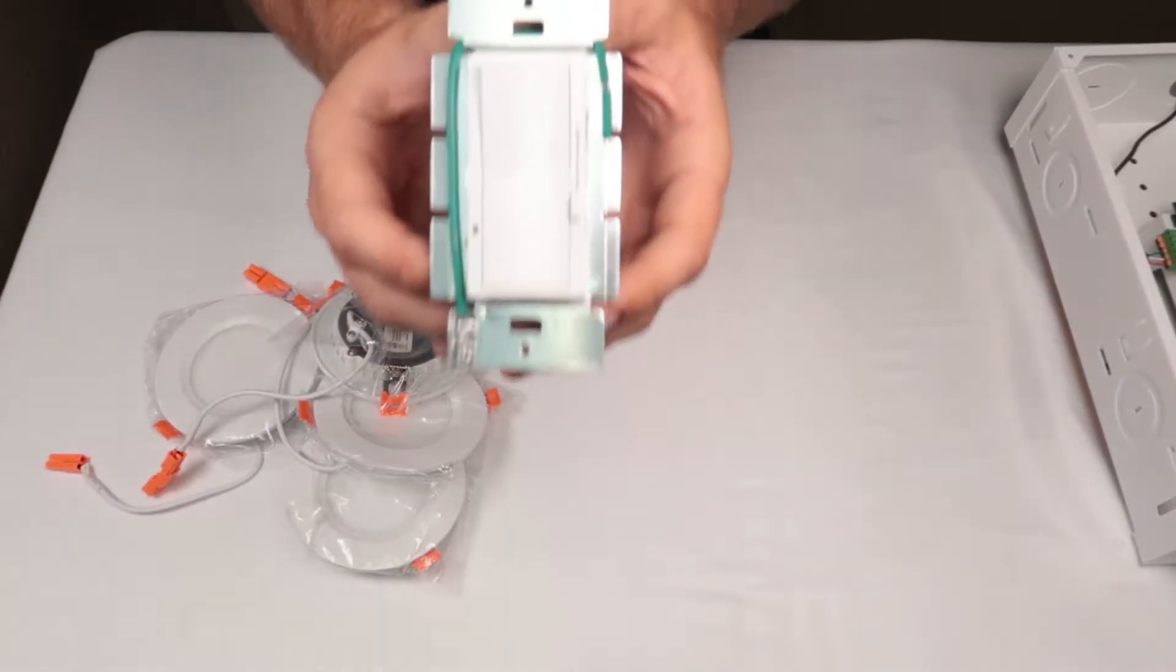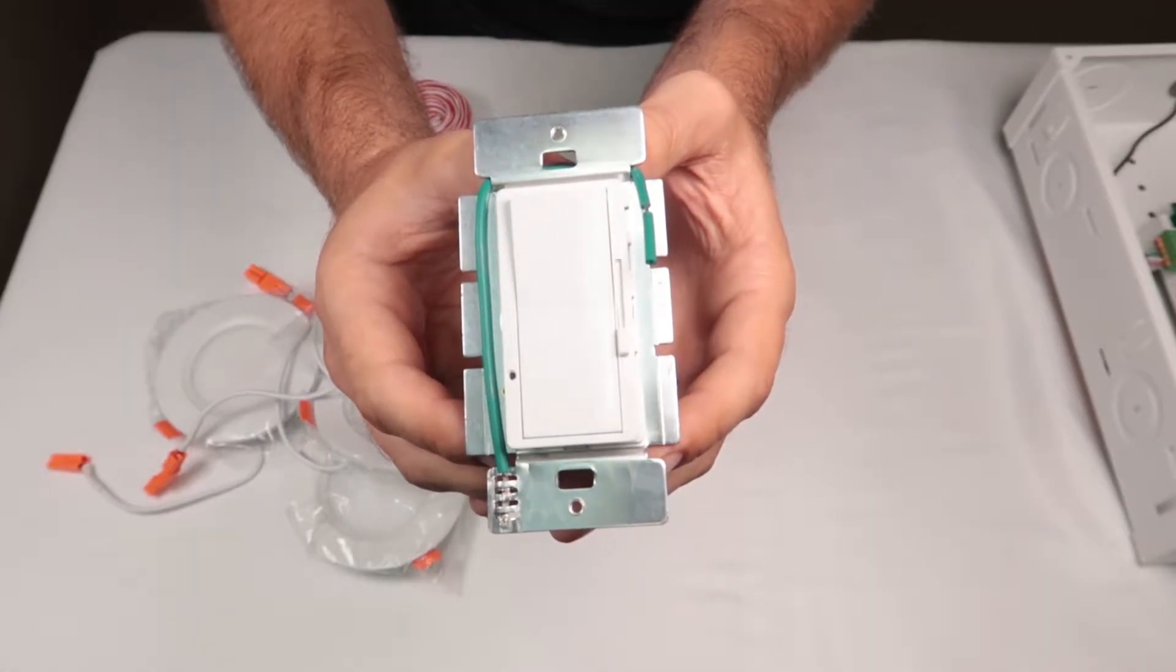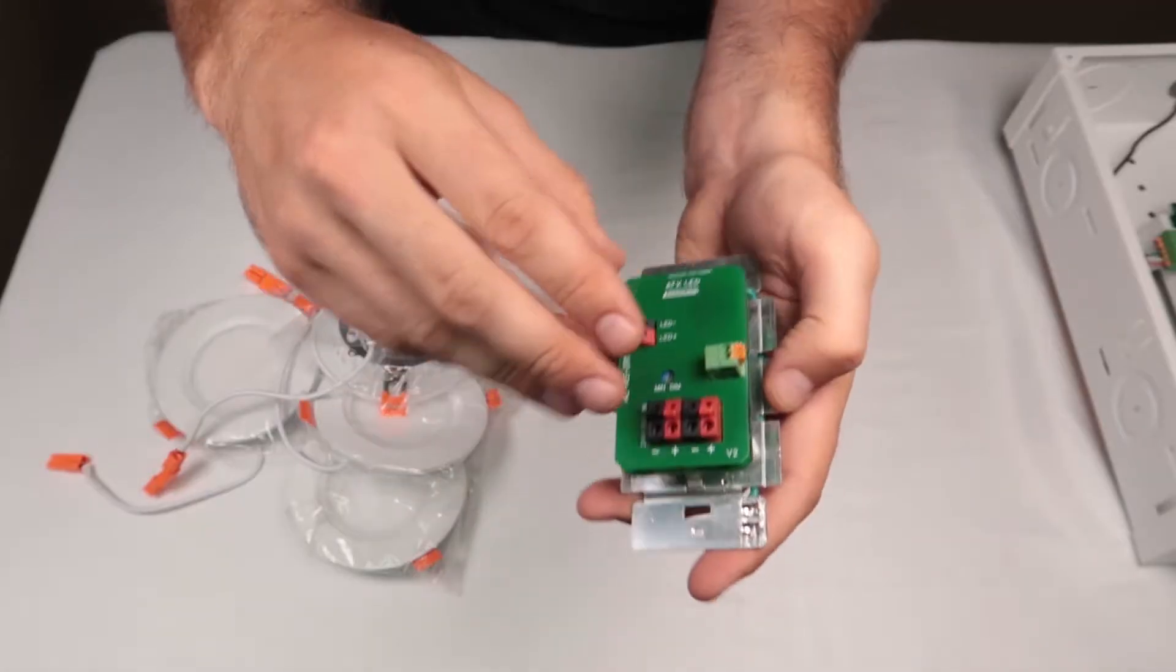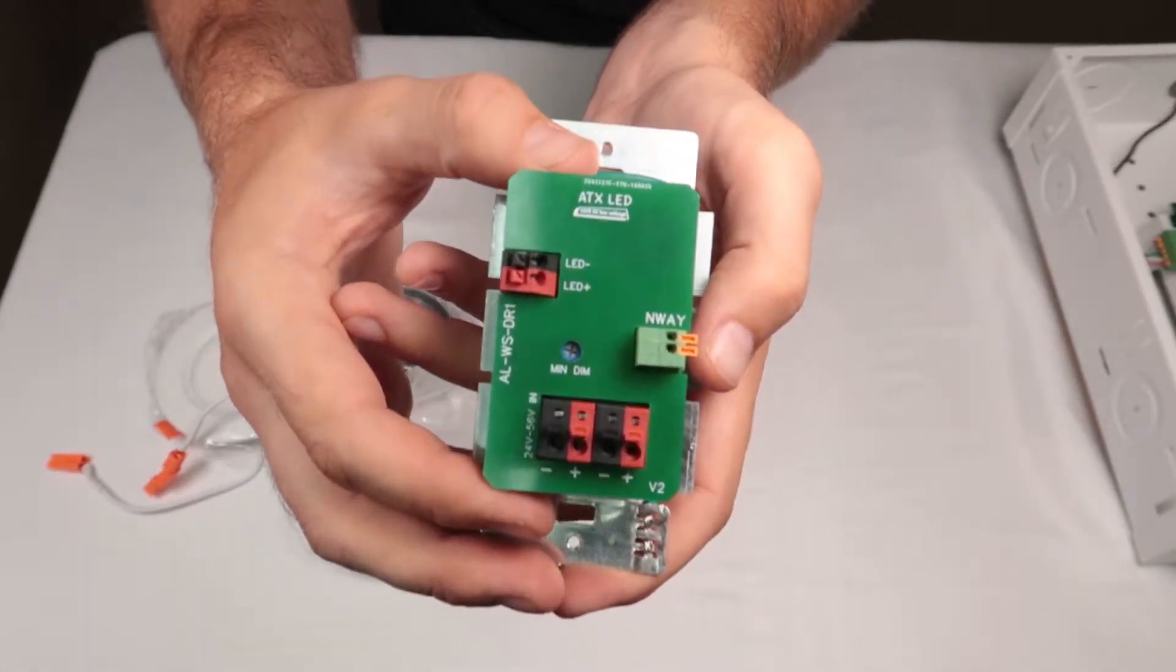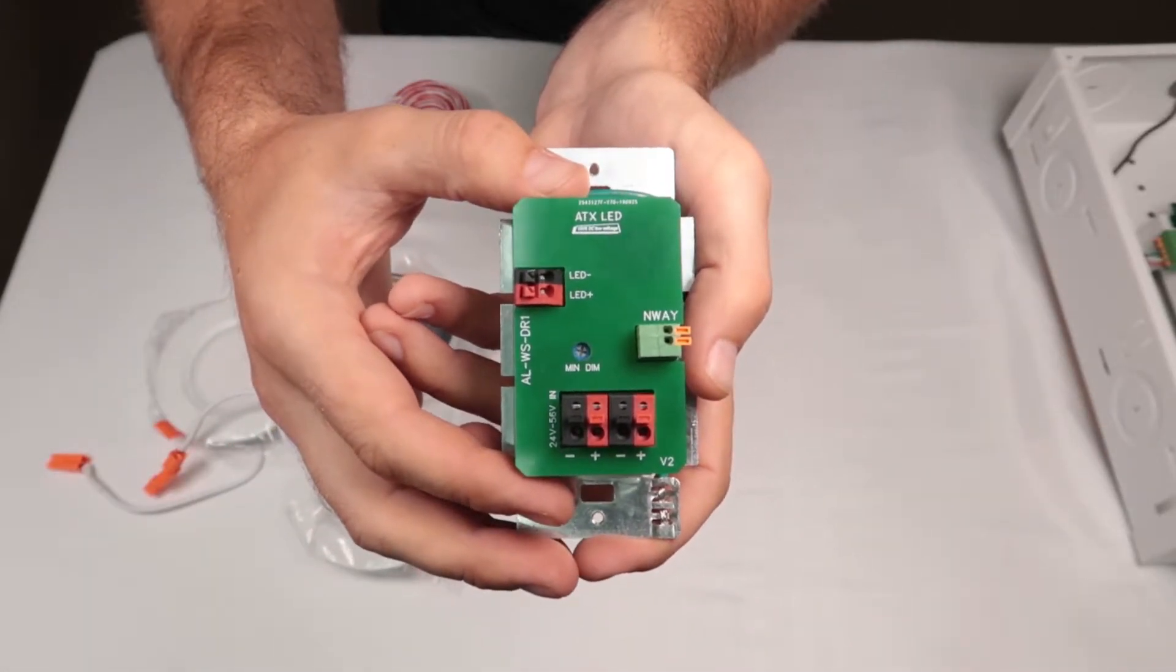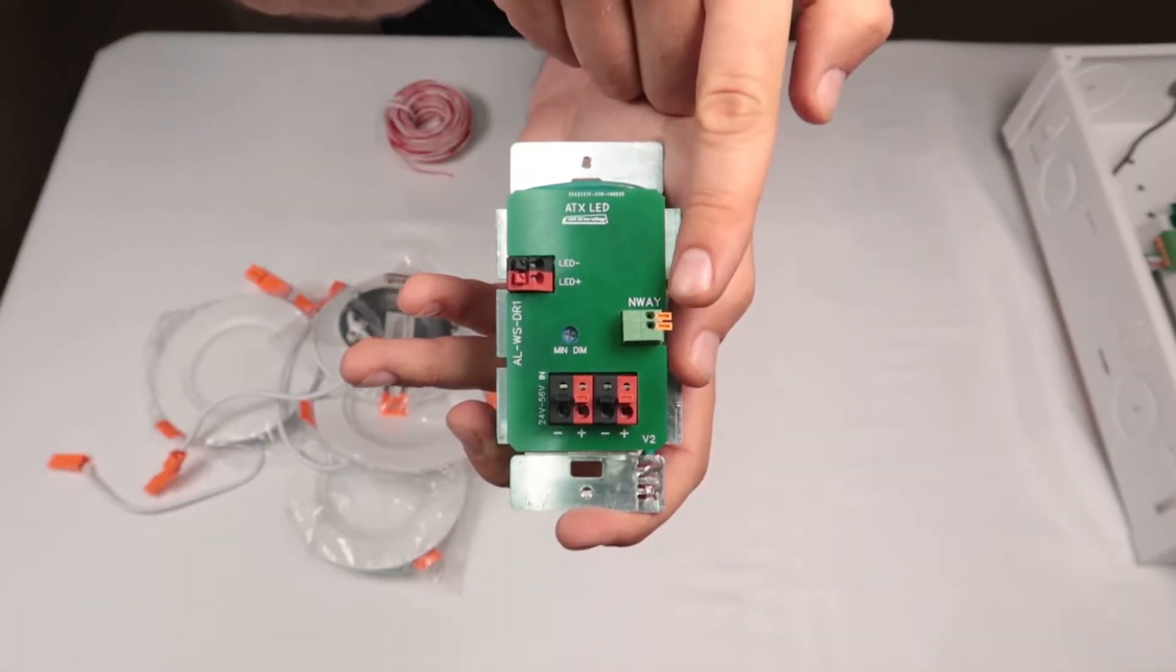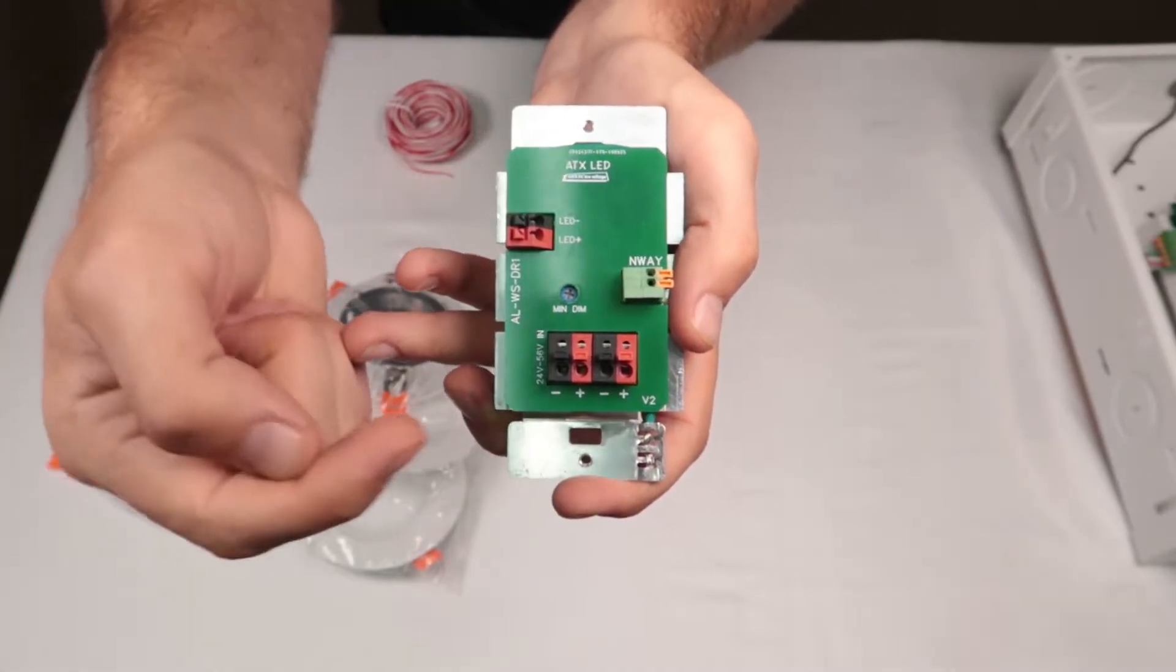This is the ALWS-DR1 wall switch. It supports up to four of the dimmable 4-inch LED wafer lights. Its basic components are the LED lighting terminal, the in-way terminal, and the DC power bus.